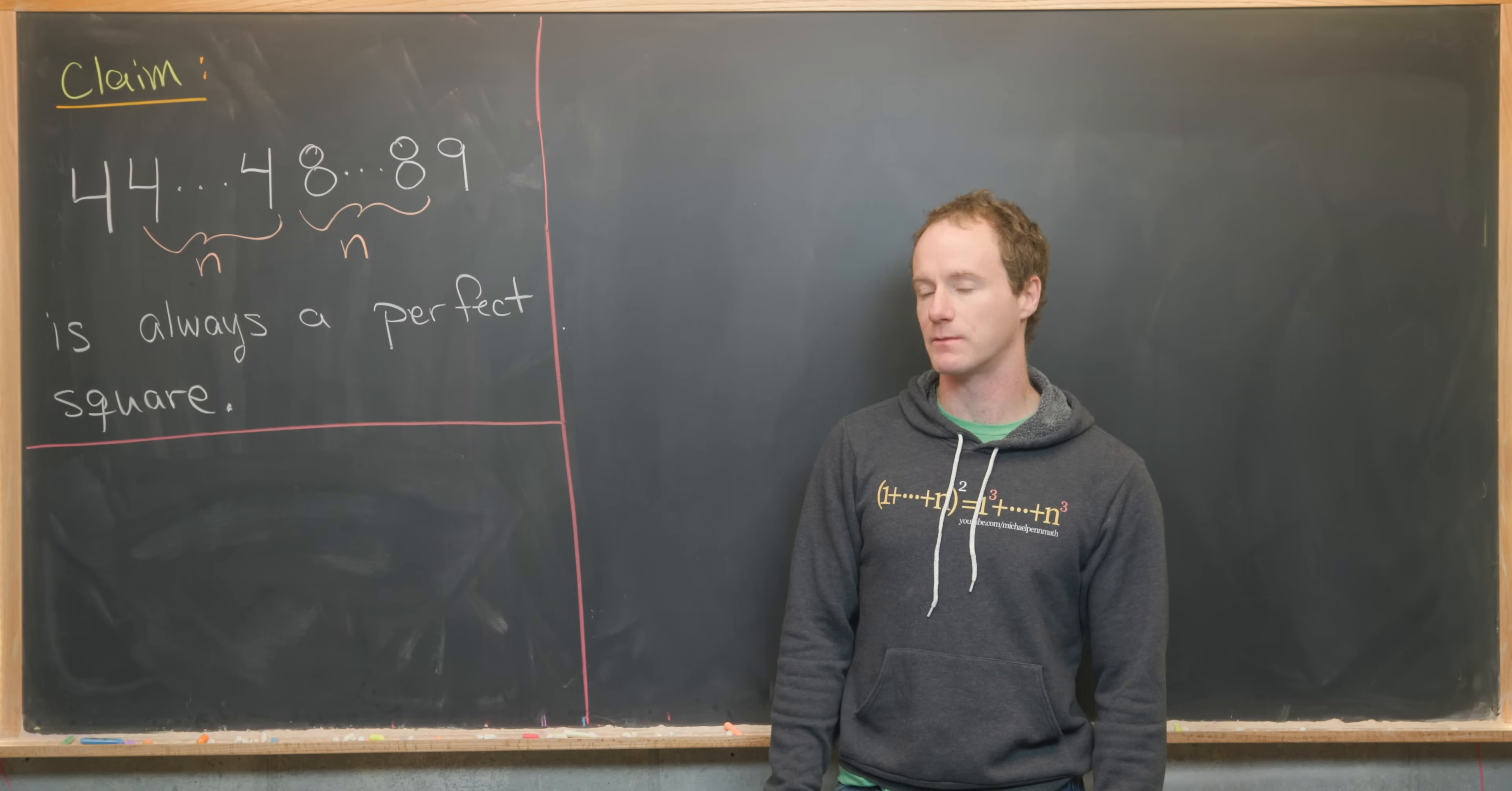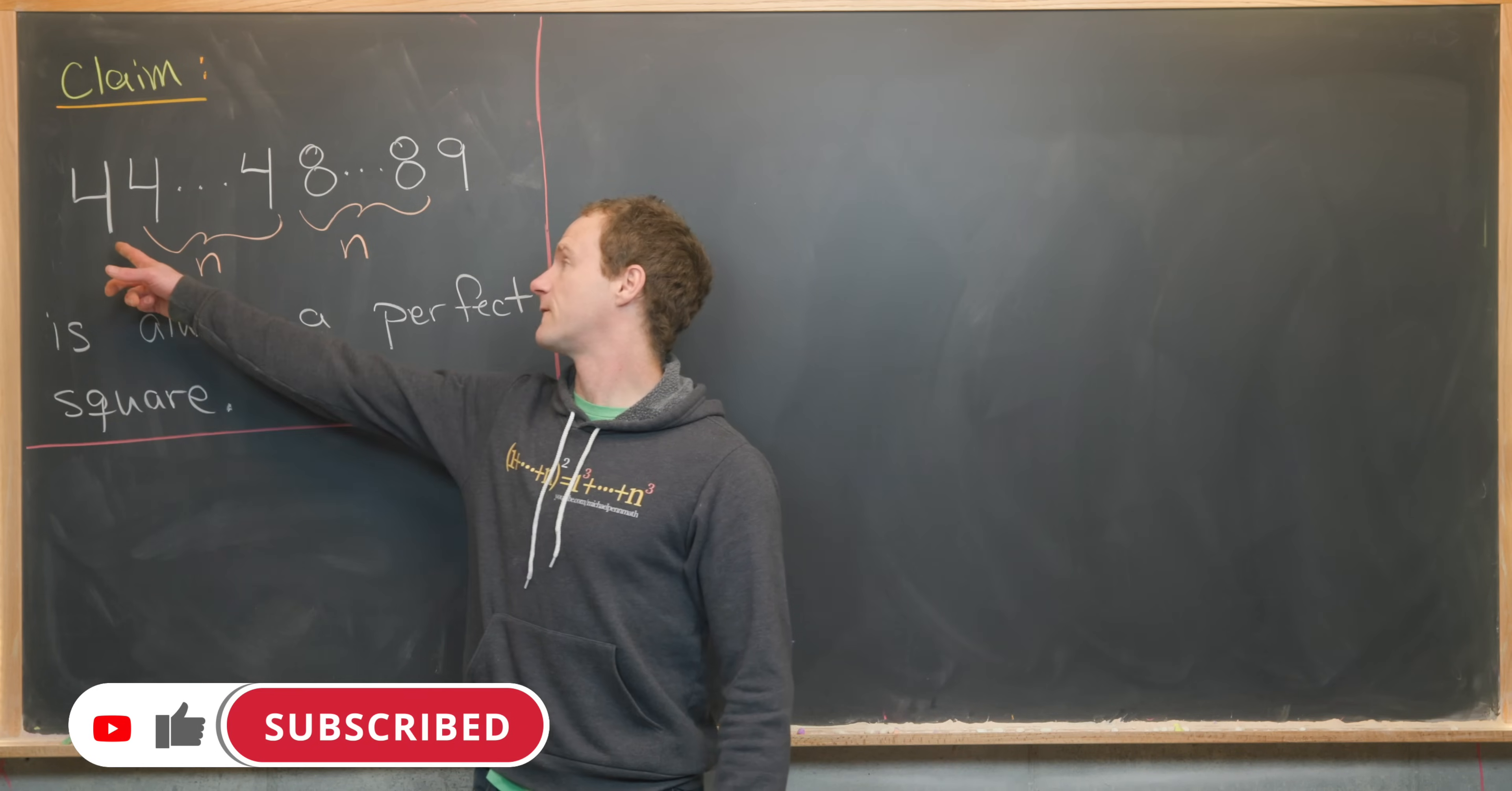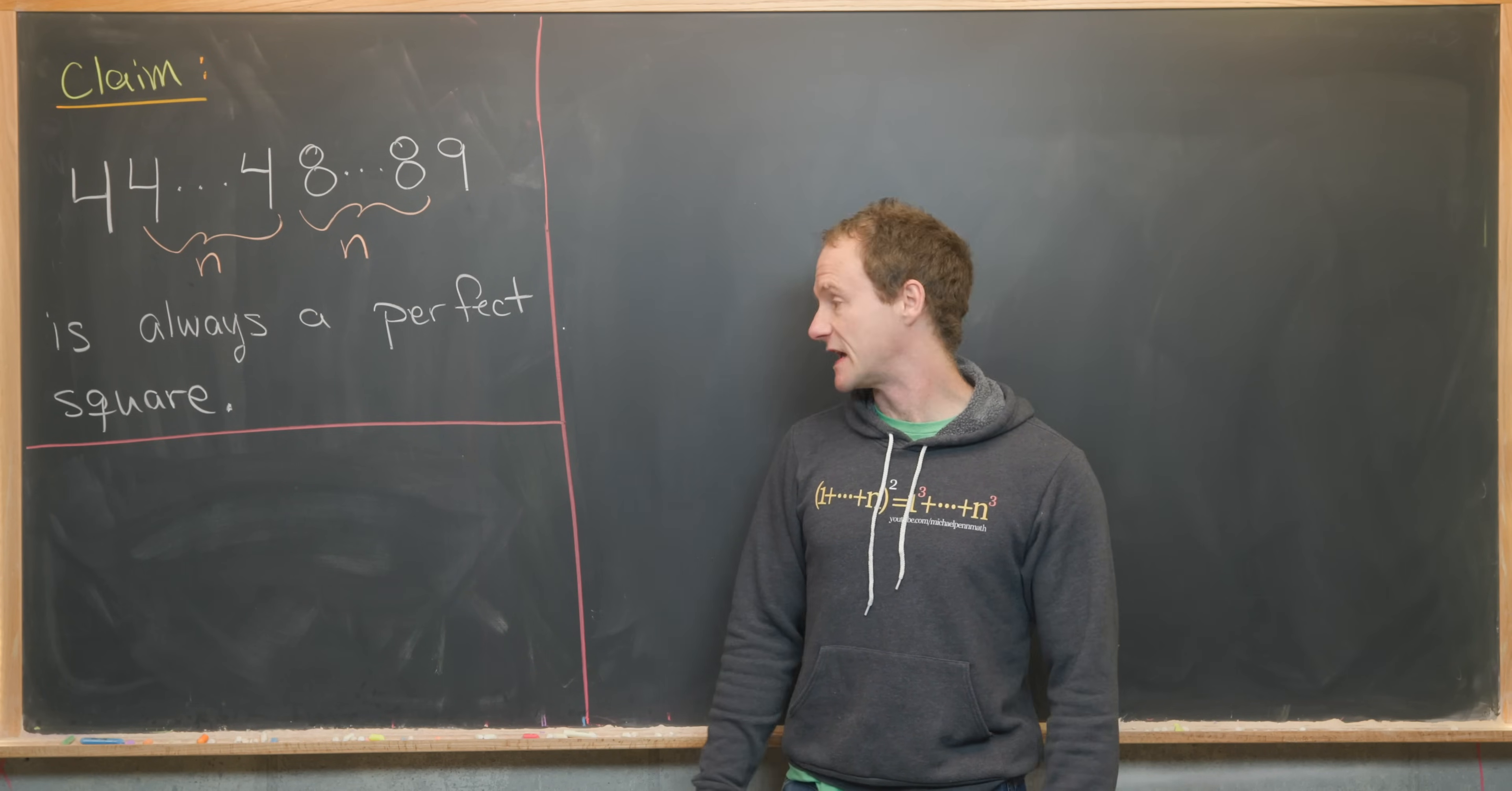Here we're going to look at a pretty classic number puzzle. So our goal is to prove for any n, so that's any non-negative integers n, the number 4 followed by n 4s followed by n 8s followed by a 9 is always a perfect square. So maybe explore this on your own to see that the first few cases work and maybe post those in the comments.